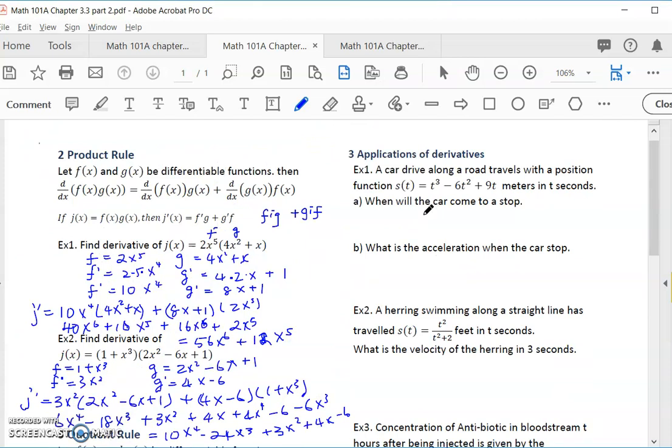Second application is to study motion of objects. This is a car that drives horizontally with a position function s of t, t cubed minus 6t squared plus 9t. We want to know when will the car come to a stop? When the car comes to a stop, the velocity is 0. And what is velocity? So that is f prime, velocity equals 0.